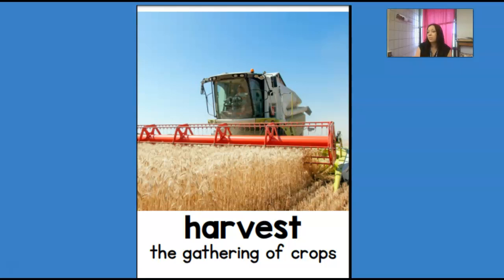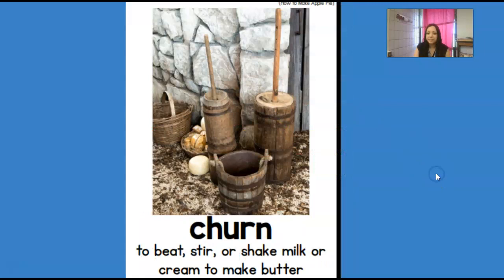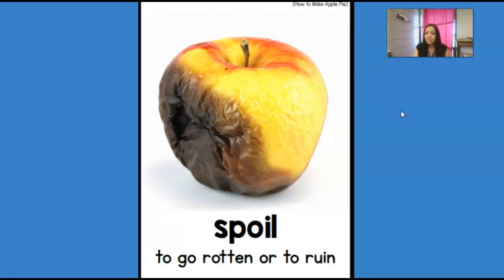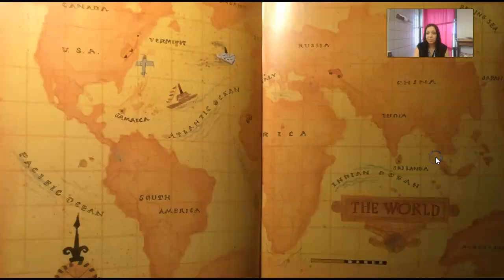In this book, we're going to be talking a lot about harvesting apples. Churn means to beat, stir, or shake milk or cream to make butter. This is an old butter churn — they used to keep beating and stirring it until they could make butter. And our last word is spoil, which means to go rotten or to go bad. This apple has a spoiled spot.